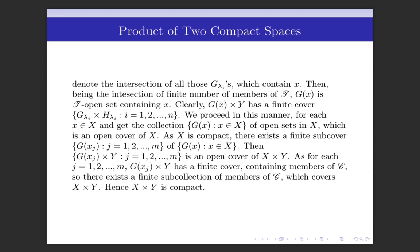Clearly, G(x) cross Y has a finite cover { G_{λᵢ} × H_{λᵢ} : i = 1, 2, …, N }. Since this is an open cover for {x} cross Y and the G_{λᵢ}'s contain G(x) — because G(x) is obtained by intersecting those G_{λᵢ}'s — this collection is also a finite open cover for G(x) cross Y. So we have a finite cover for G(x) cross Y.